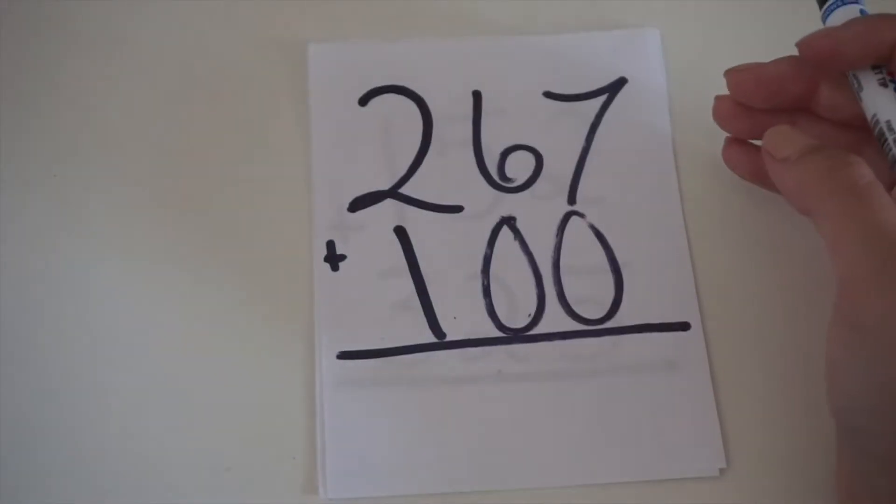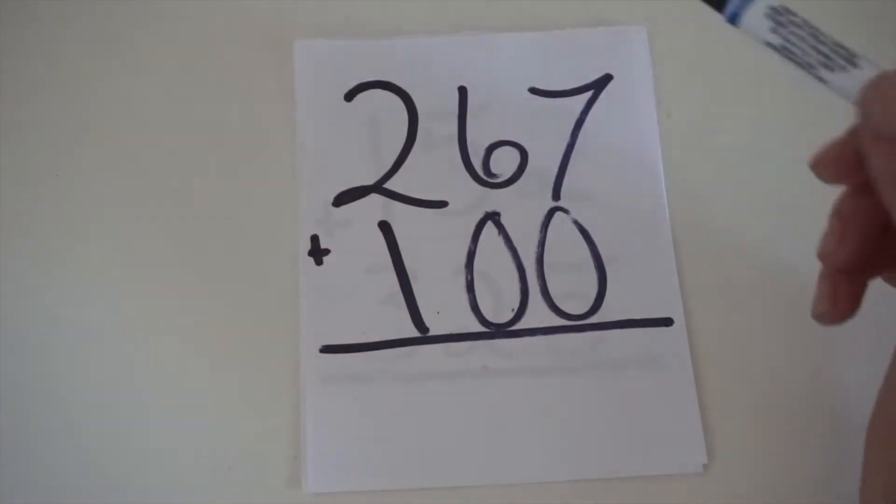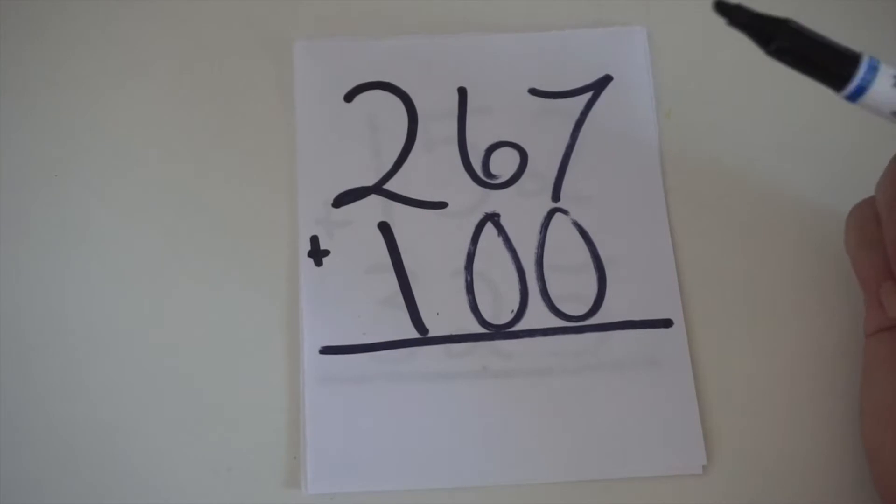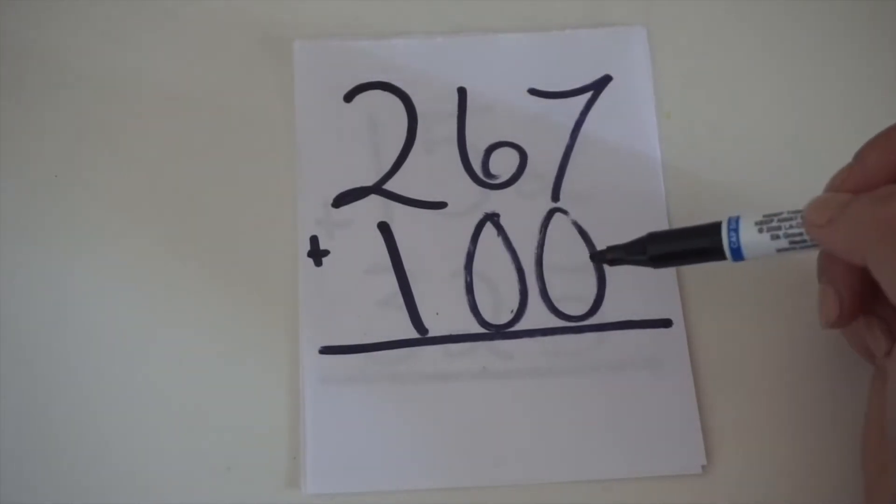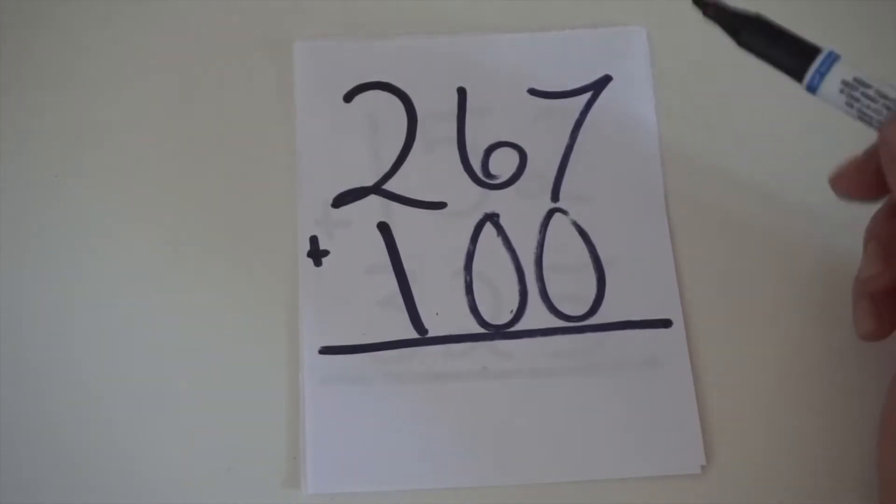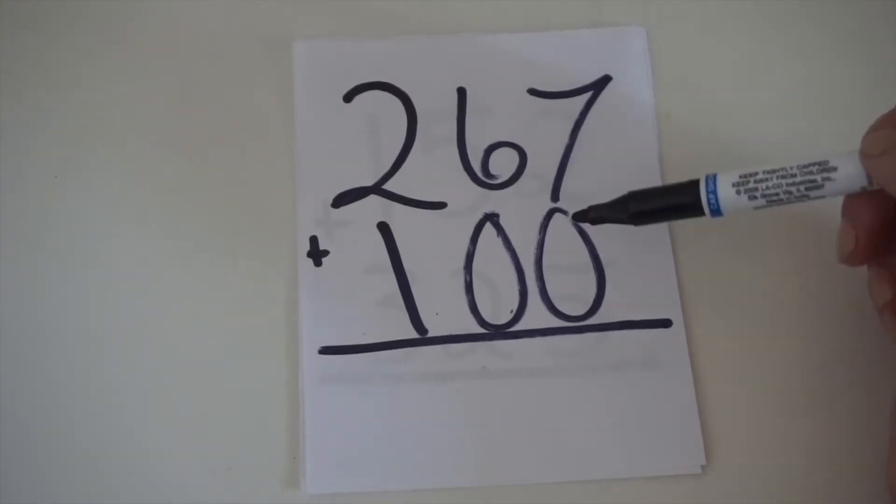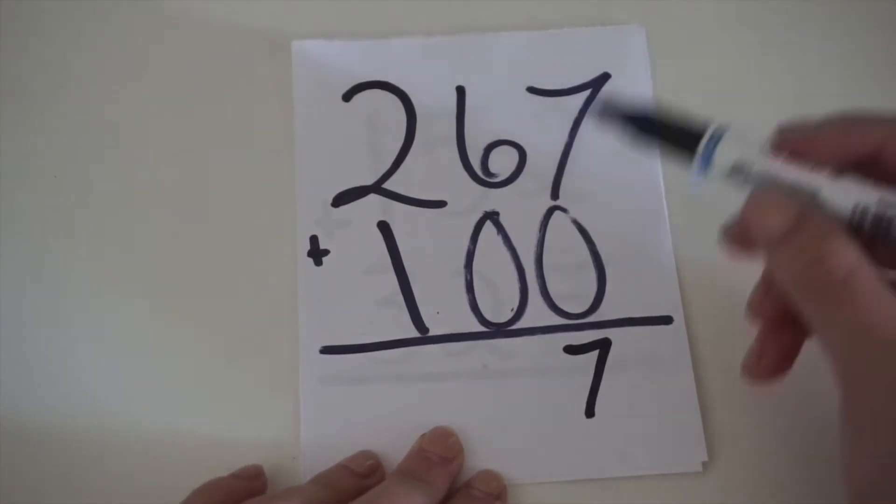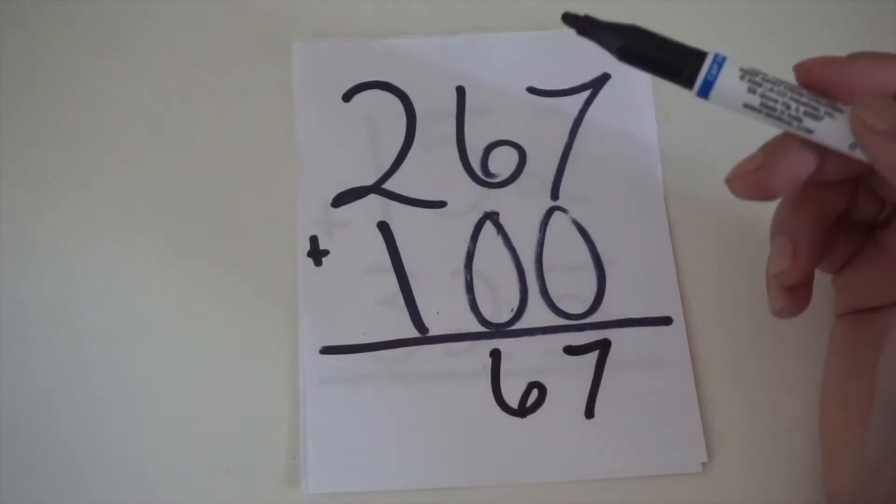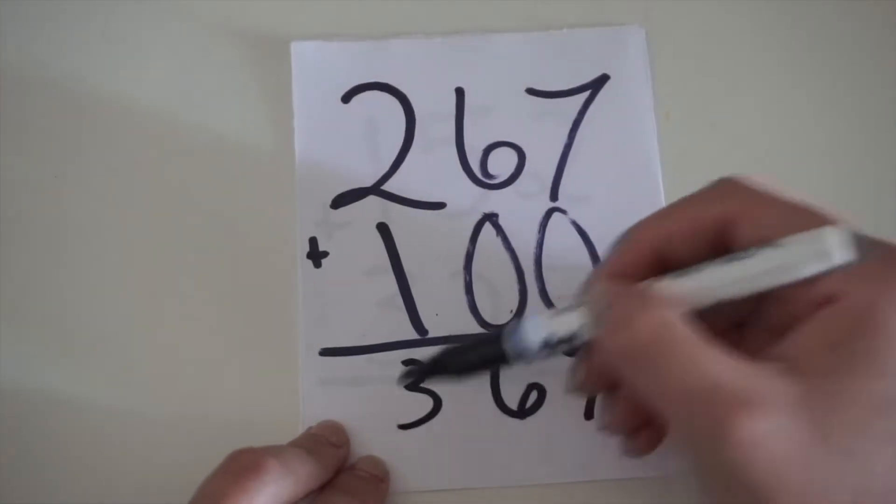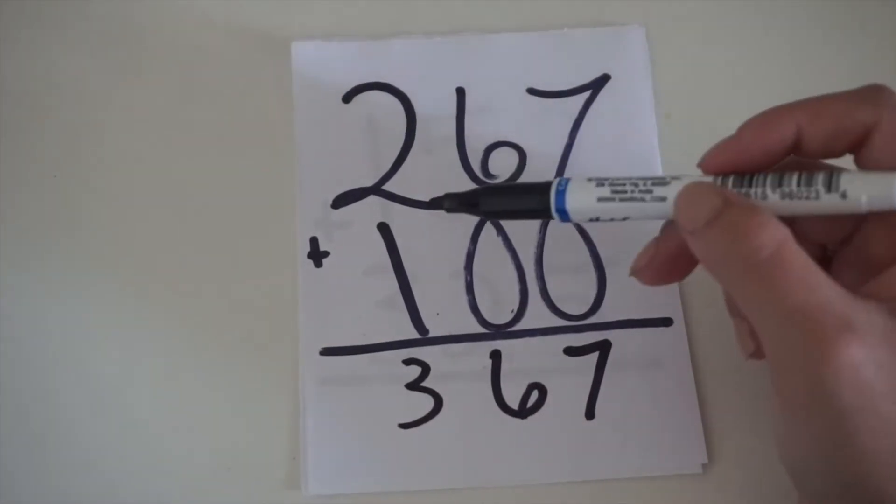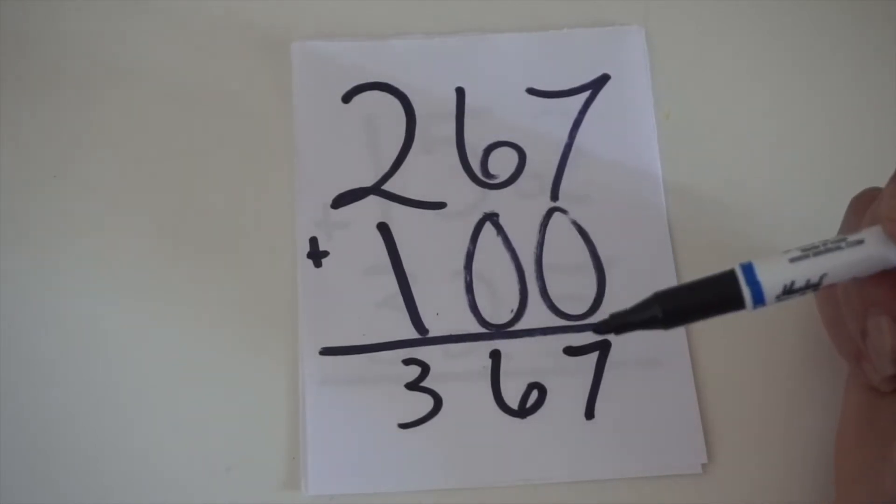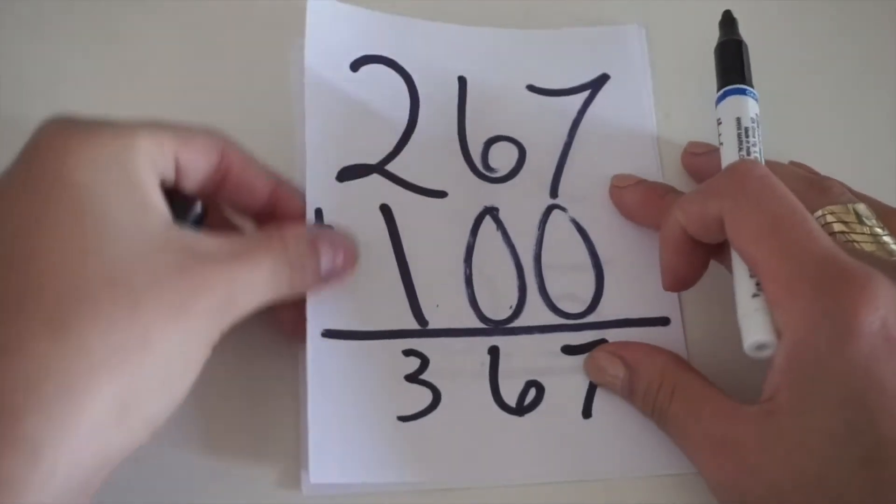Now, our third equation, we have 267 plus 100. Again, we have two zeros on our second number, so it makes it much easier to solve. 7 plus 0 equals 7, 6 plus 0 equals 6, and 2 plus 1 equals 3. So, 267 plus 100 equals 367. That would be the answer to this equation.